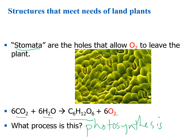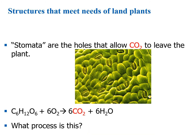There's another process where stomata would be helpful to allow carbon dioxide to leave the plant. The opposite process of photosynthesis is where we start with glucose, burn it up with oxygen, and produce carbon dioxide and water. By now I'm hoping you are thinking of cellular respiration.